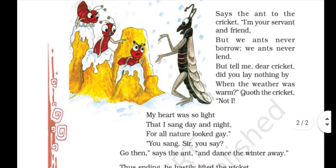'So says the ant to the cricket: I am your servant and friend, but we ants never borrow, we ants never lend. But tell me, dear cricket — did you lay nothing by when the weather was warm?' Quote the cricket: 'No, not I.' When he went to the ant, the ant told him: I am your servant and friend, but there is one thing about us ants — we don't borrow from someone, we don't lend to someone. But then the ant asked: when the weather was warm, you didn't keep anything stored away so that you could use it in winters. Then the cricket says: no, I didn't do anything like that.